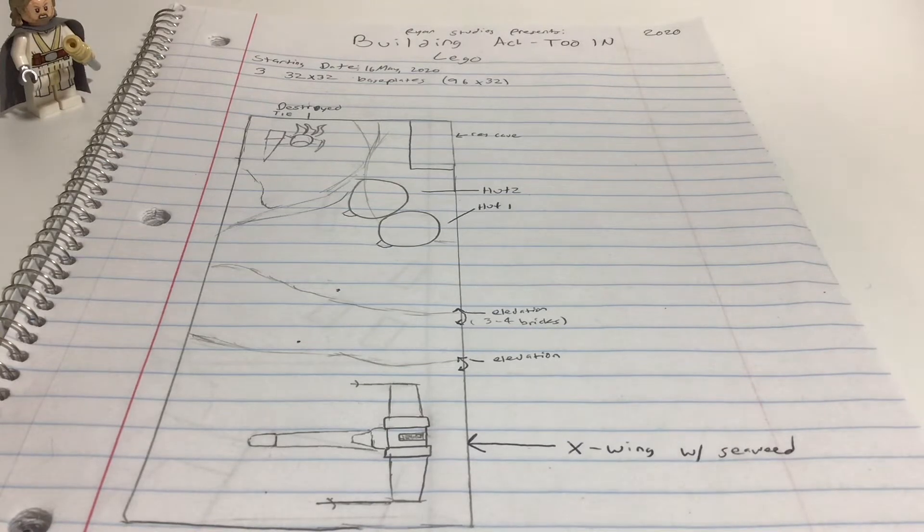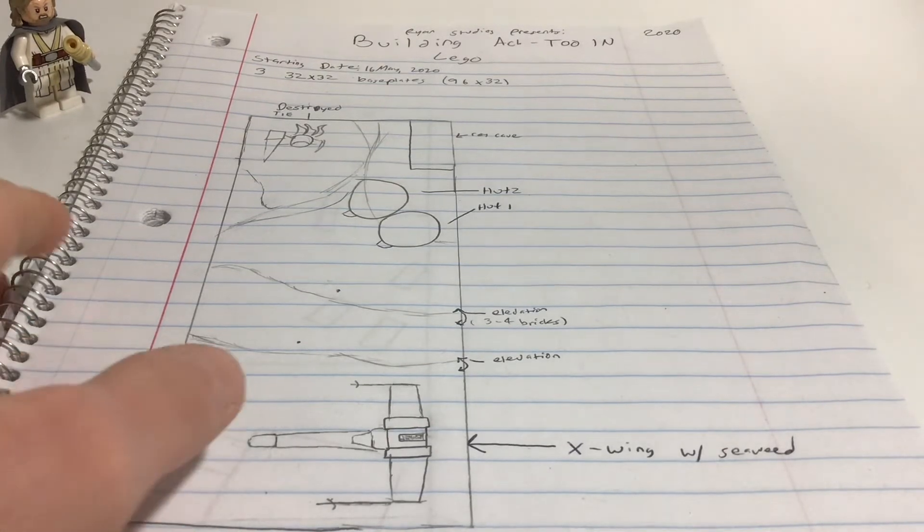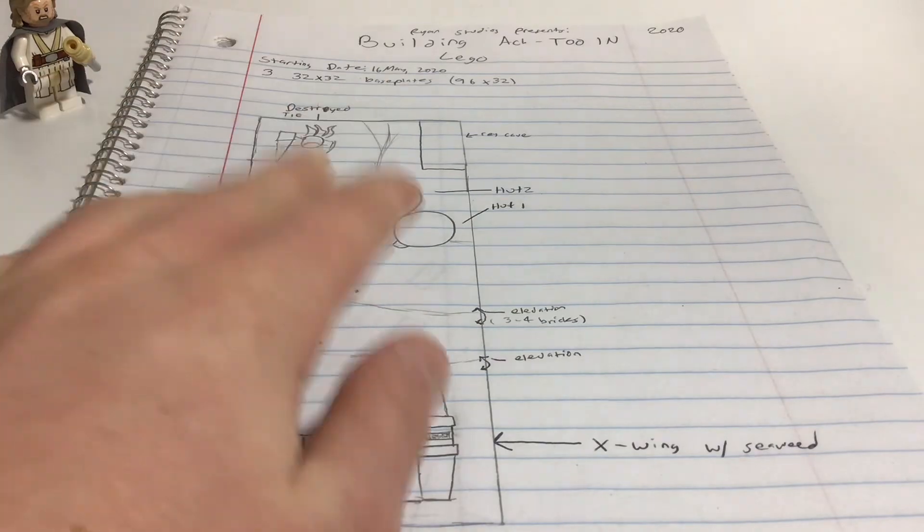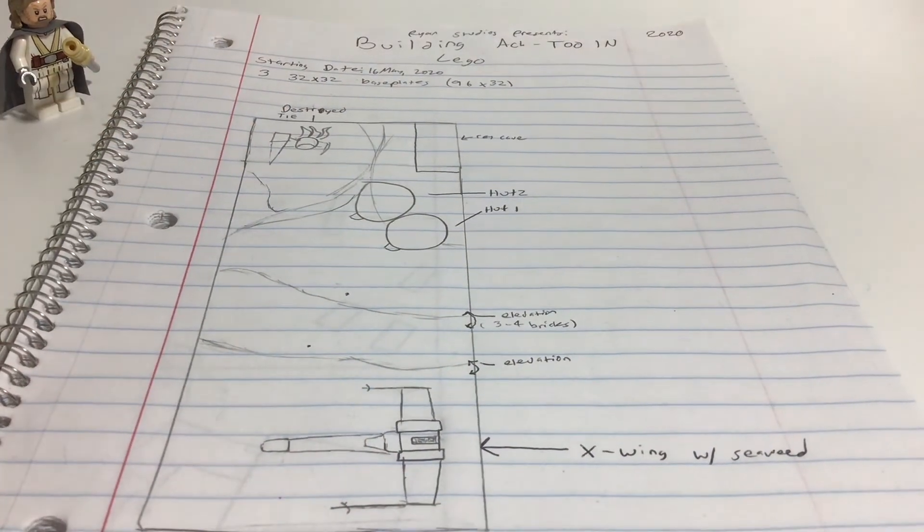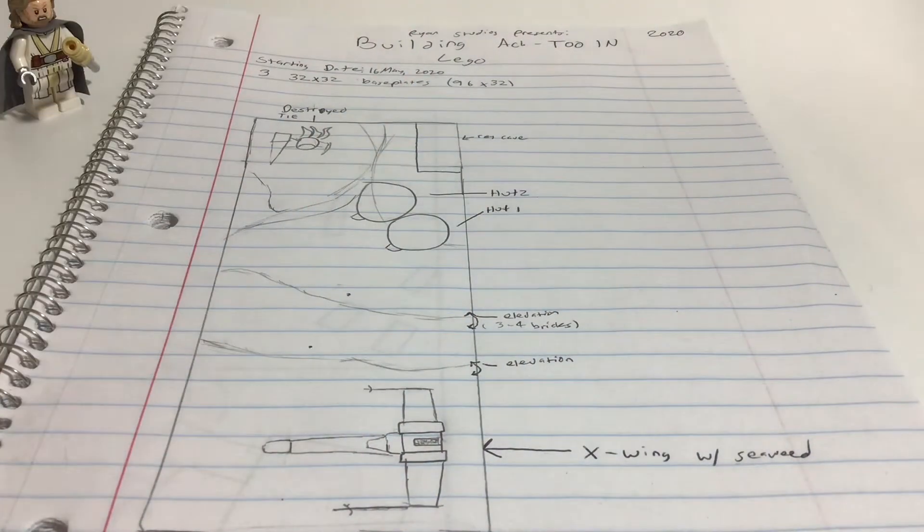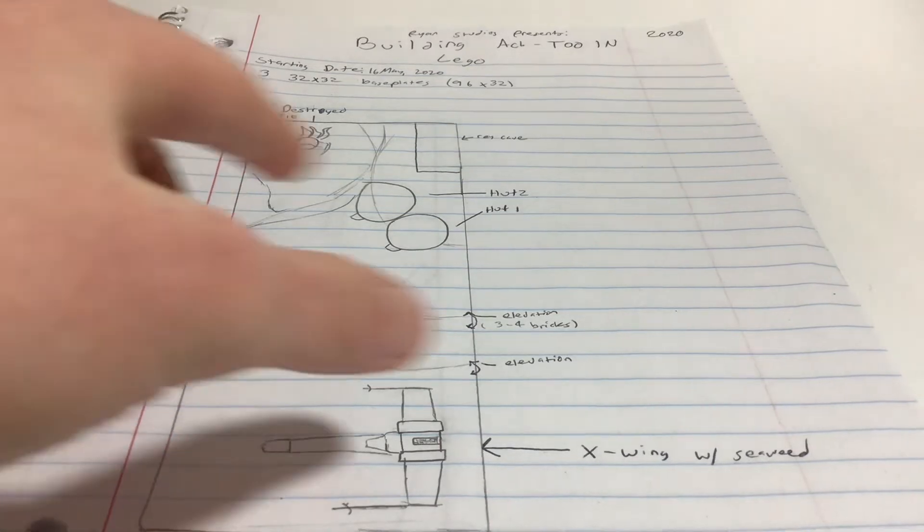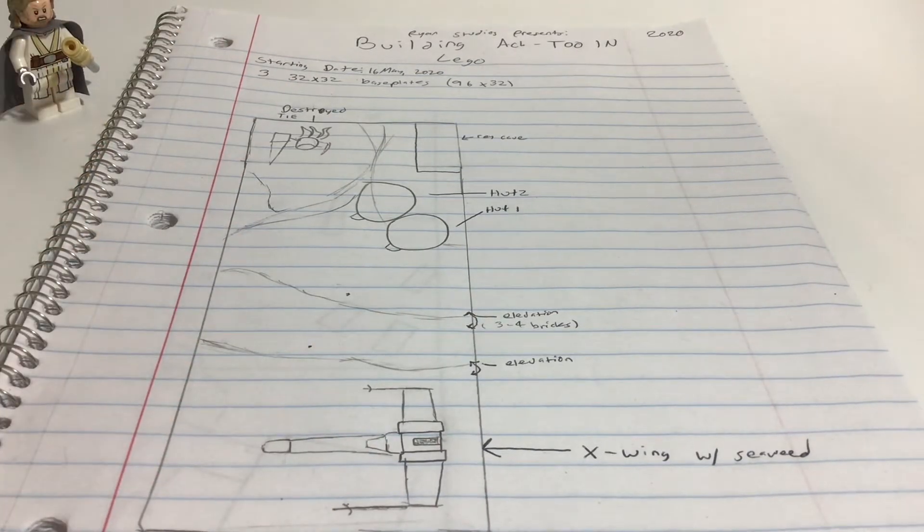We'll deal with the Death Star in next week's episode, but this is my plans for Ahch-To Island. Obviously the starting date is today, May 16th, 2020. It's gonna be three base plates like the Death Star.